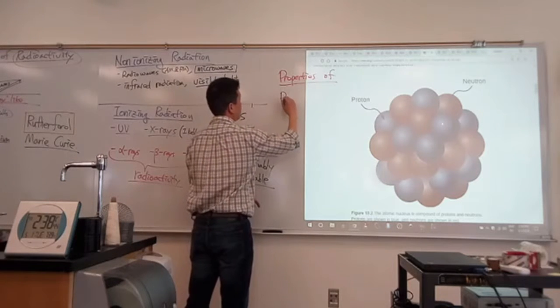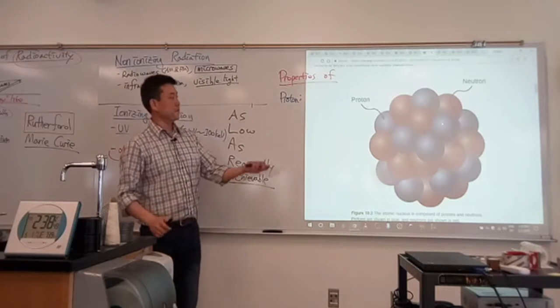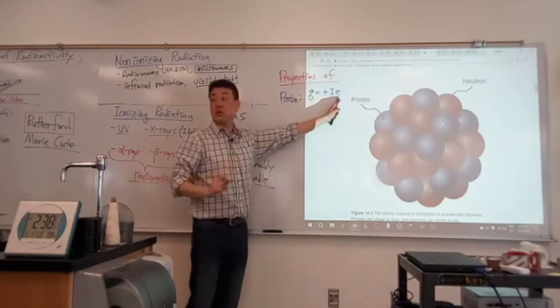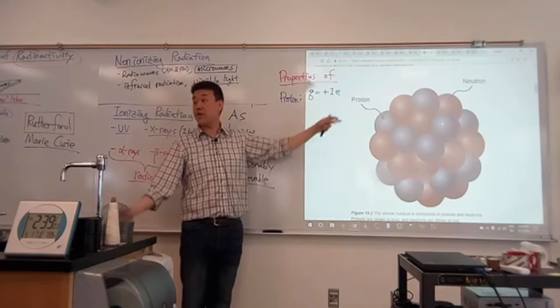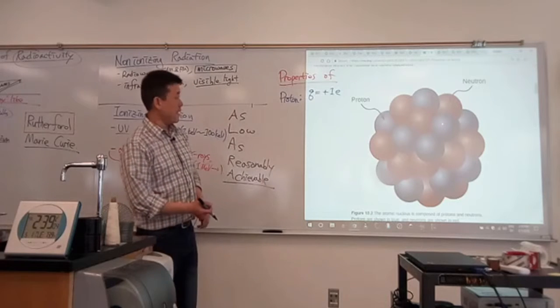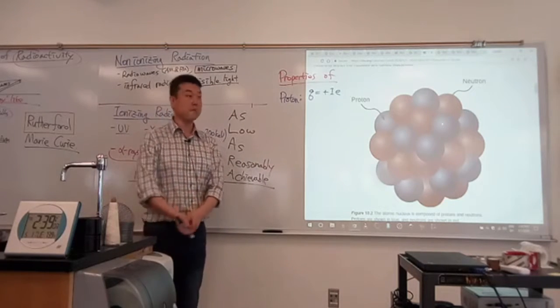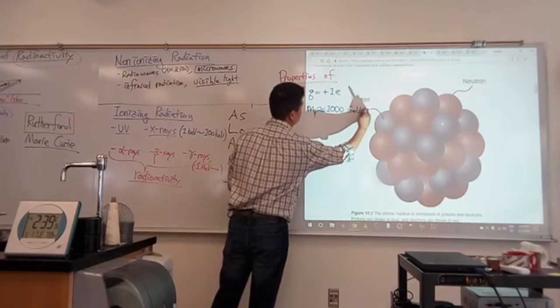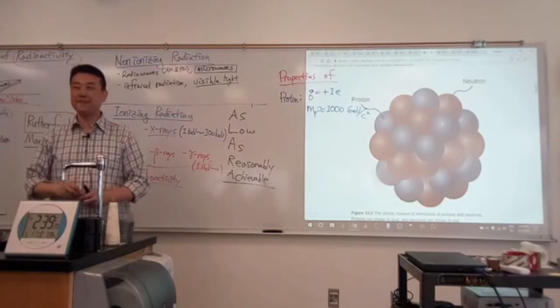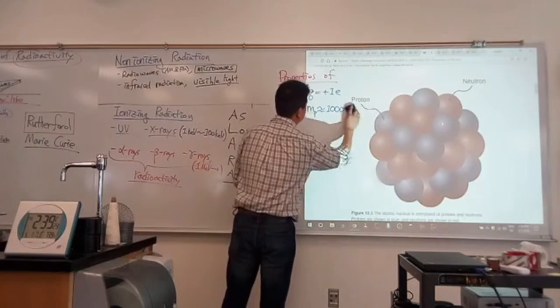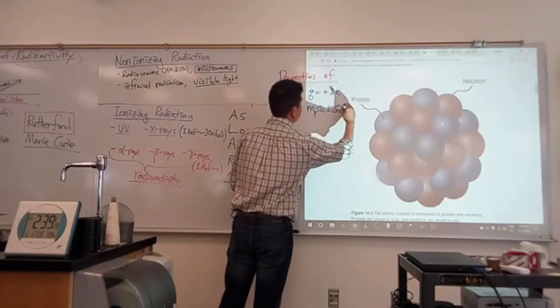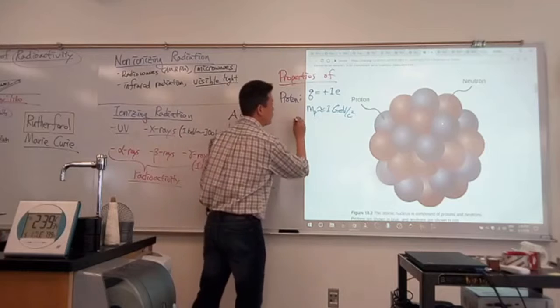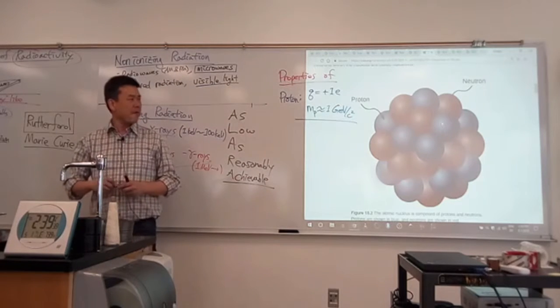Properties of proton would be that it has charge. The charge of proton is plus 1e, the elementary charge or the same magnitude of charge as the electron. Because that's how hydrogen atom is electrically neutral. And the mass of the proton from the mass of the hydrogen atom is approximately, mass of the proton is approximately 1 GeV per C squared. That's the mass of the proton. So that's proton. You know it exists because that's at the core of the hydrogen atom.